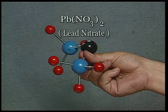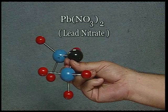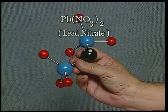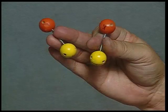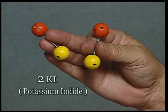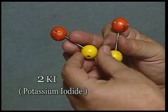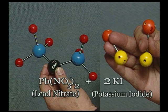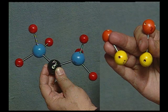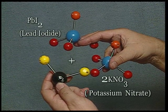This model represents the molecule of lead nitrate — black coloured balls represent lead atoms, blue coloured balls represent nitrogen atoms, and red coloured balls represent oxygen atoms. This model represents potassium iodide — orange coloured balls represent potassium and yellow coloured balls represent iodine. When these two solutions are mixed in the double displacement reaction, two iodine atoms from two molecules of potassium iodide replace two nitrate groups, and a yellow precipitate of lead iodide is formed.